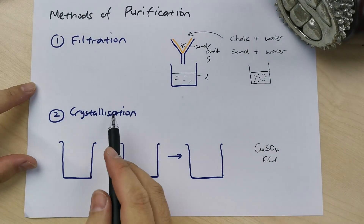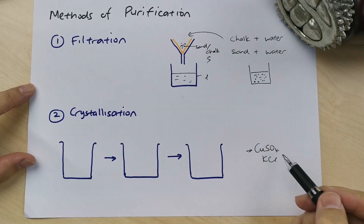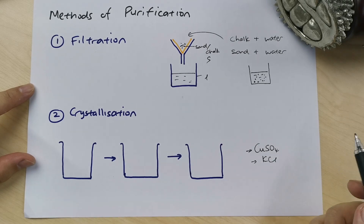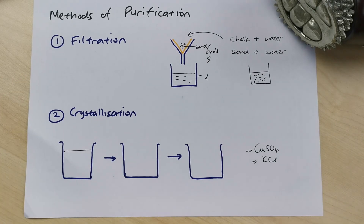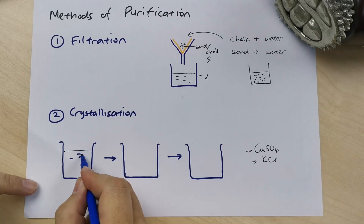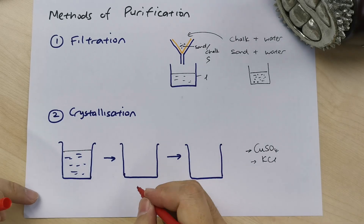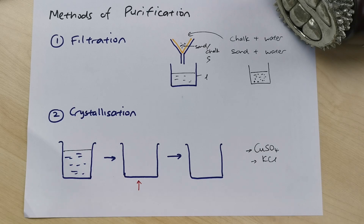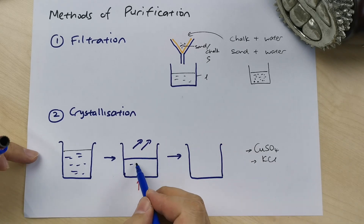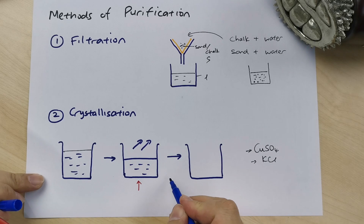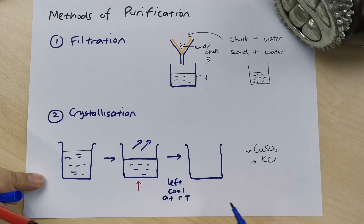Next is crystallization. Crystallization is very common — you'll see it in questions when they want you to produce crystals from copper sulfate (CuSO₄) or potassium chloride (KCl). What happens is you have a liquid solution of CuSO₄ and you heat it up so some of the water evaporates off, leaving a concentrated CuSO₄ solution. The key step is you then leave it to cool at room temperature.